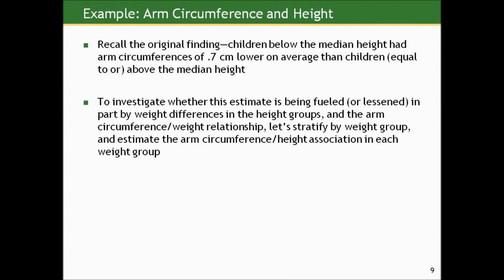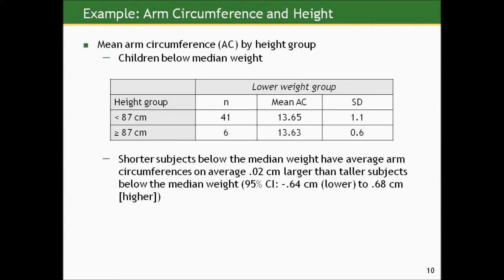Recall the original finding: children below the median height had arm circumferences of 0.7 centimeters lower on average than children at or above the median height. To investigate whether this estimate is being fueled or lessened in part by weight differences, let's stratify by weight and re-estimate the association between arm circumference and height. Here's a table of mean arm circumference by height group, considering only children in the lower weight group.